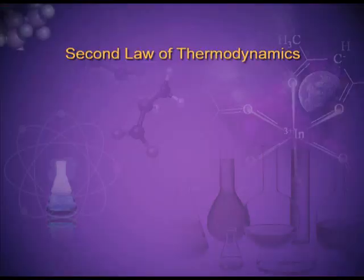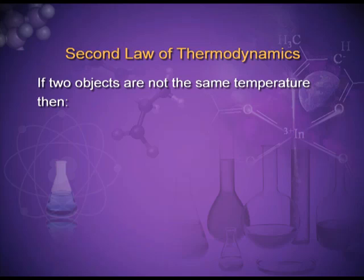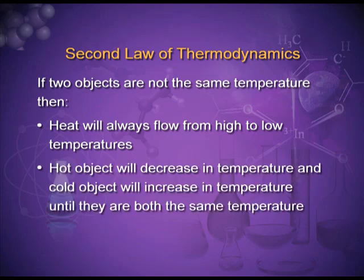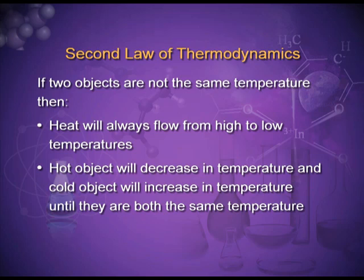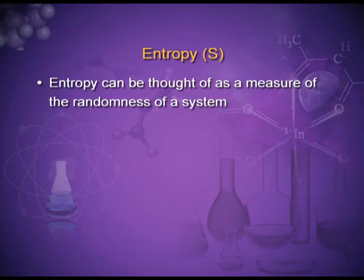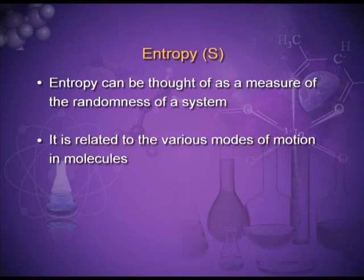The second law of thermodynamics states that if two objects are not at the same temperature, heat will always flow from high to low temperature. The hot object decreases in temperature and the cold object increases in temperature until they reach the same temperature. The entropy of the universe increases in a spontaneous process and remains unchanged in an equilibrium process. The entropy change of the universe must be greater than zero for a spontaneous process, and equal to zero for an equilibrium process.